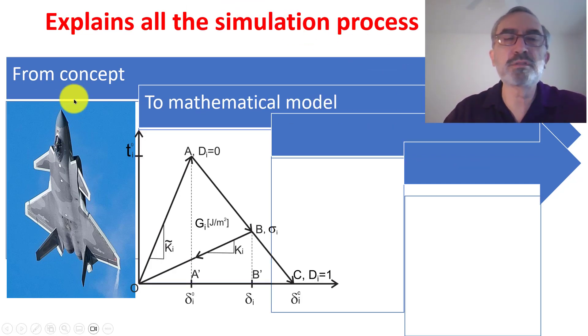So from concept, we identify a problem. In this case, it's adhesion or delamination. This is the model, the mathematical model for cohesive zone model. It's explained in Chapter 10, and it controls delamination and adhesion.